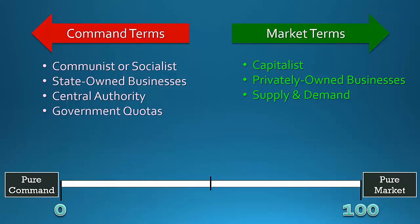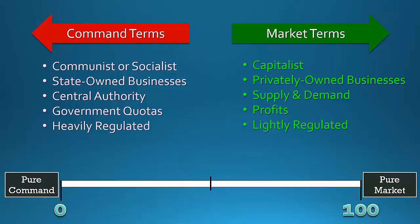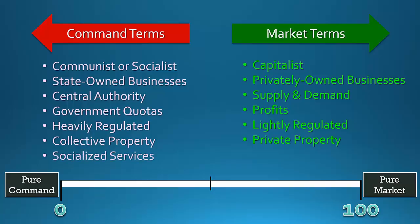If industries are motivated to produce based on government quotas, that country is probably on the command side. But if industries are motivated by profits, that's a market economy. If industries are heavily regulated, that tends to be toward the command side, whereas lightly regulated industries point to the market side. If property is owned collectively — another word for government ownership — that's a clue toward the command end, but privately owned property points to the market end. Finally, socialized services like socialized health care suggest a command-side country, whereas privatized services are found in more of a market economy.